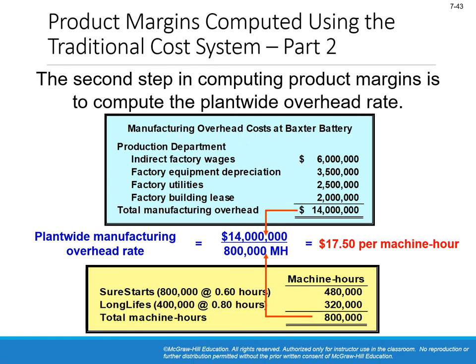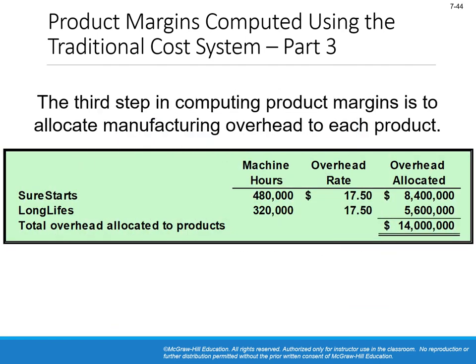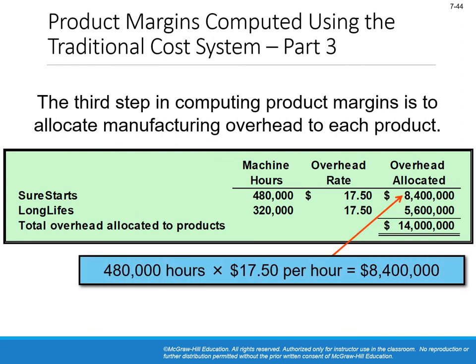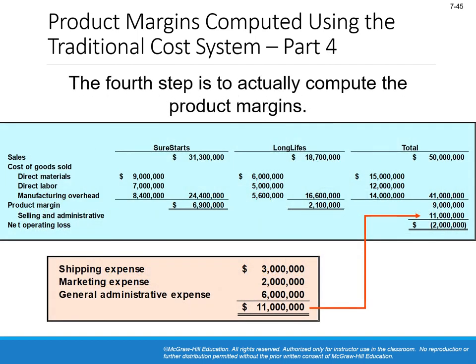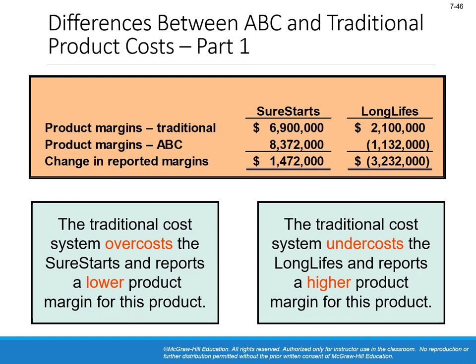The key difference between traditional costing and ABC is that traditional systems only use manufacturing overhead with a single activity base like machine hours, which may lead to wrong decisions. Using only machine hours, both products might appear profitable, whereas the ABC system correctly revealed that the Long Life model is unprofitable. That's the core and essence of this chapter — everything you need to know about activity-based costing.